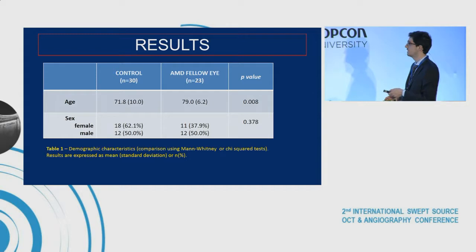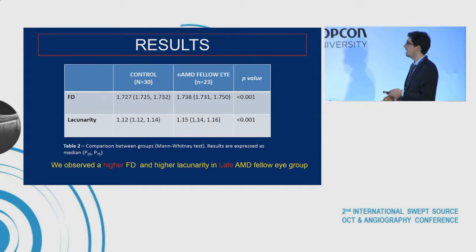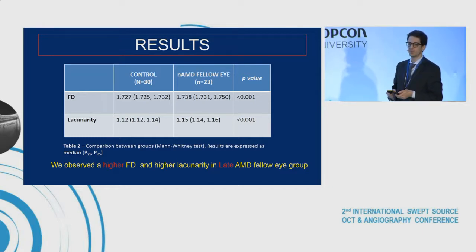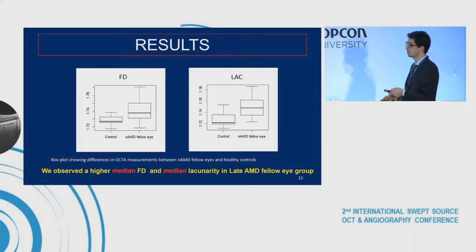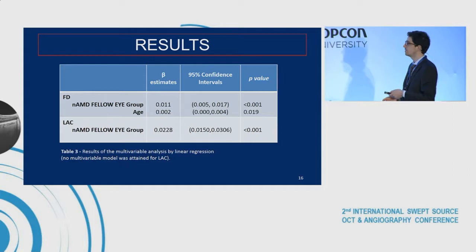Here, we have plotted the differences in age, sex, and gender between the two groups. In this table, we can see the mean differences in fractal dimension between NAMD fellow eyes and the control group. We observed that NAMD fellow eyes have a higher fractal dimension and higher lacunarity compared to control patients. These differences were also observed in the box plot analysis, showing a higher median fractal dimension and median lacunarity in the NAMD fellow eye group, and they stood even after correcting for patient age. The multivariable analysis also confirmed that age was correlated with a higher fractal dimension.